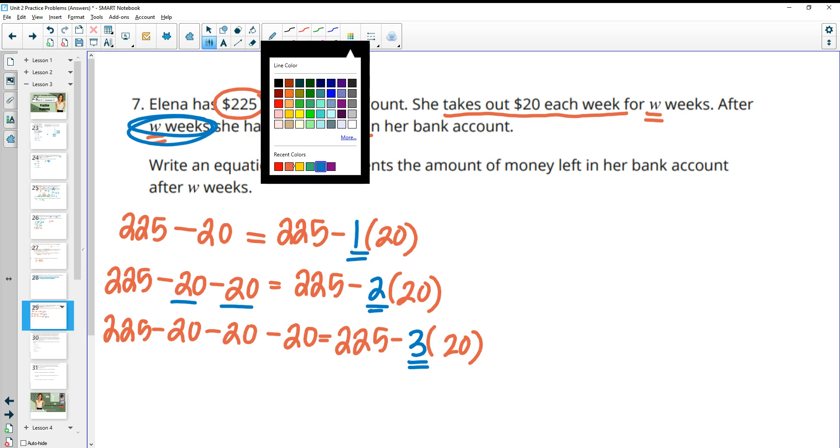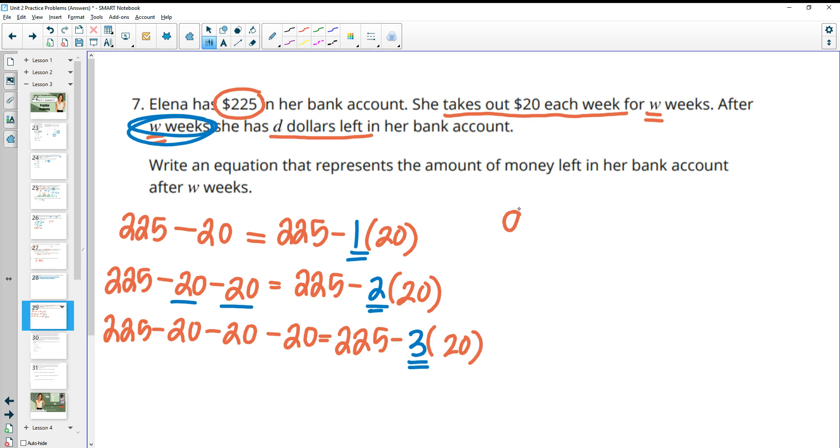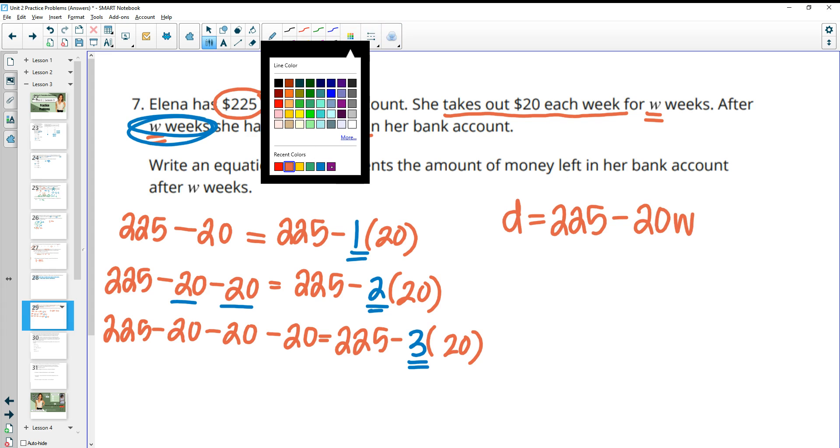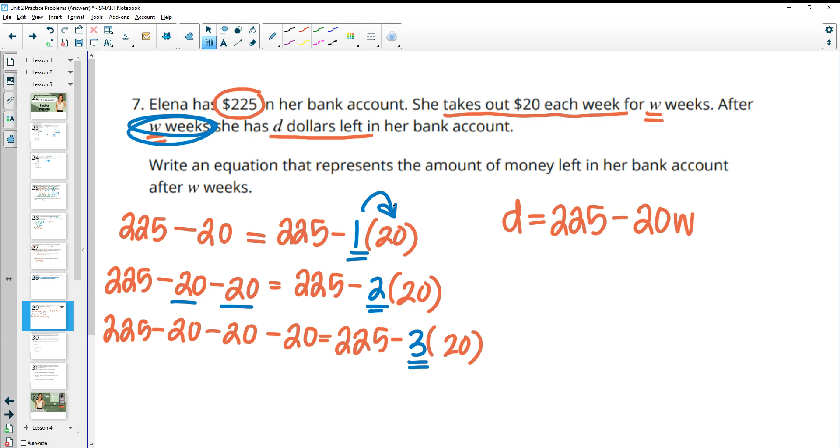So this kind of helps you see where the week or the per week is changing what's happening to help you write it in an equation. So the amount of money that she has left D is going to be equal to what she started with minus 20 times the number of weeks she took it out. So here's that W for the number of weeks that she's taking $20 out of her account.